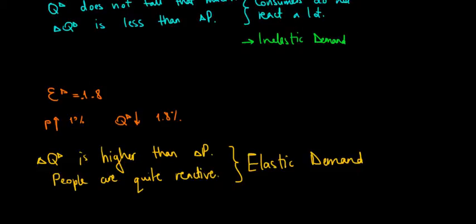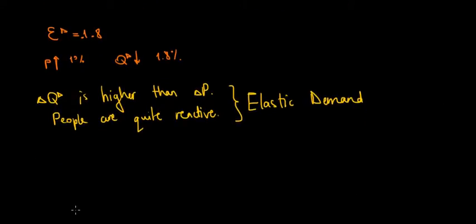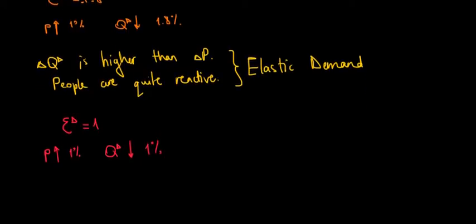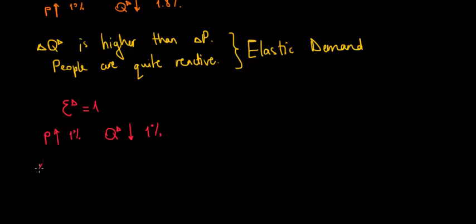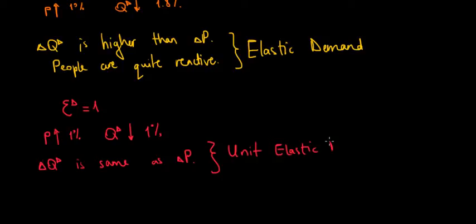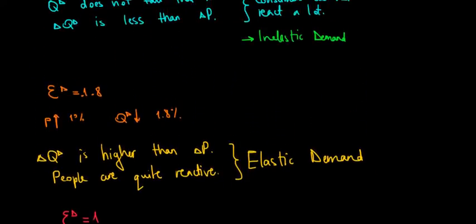Now, if elasticity of demand equals 1, that means if price increases by 1%, quantity demanded decreases by 1% as well. The change in quantity demanded is the same as the change in price — the proportion is equal. We're talking about a unit elastic demand, where people react proportionately to the change in price.